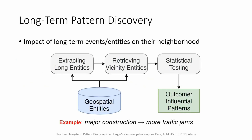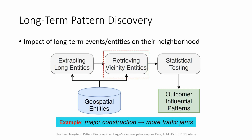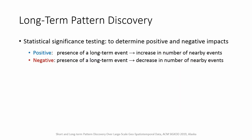We also propose a new process for long-term pattern discovery. An example of such a pattern is the existence of a major construction event which causes more traffic jams. Our process first extracts long-term entities such as a major construction or a long rain. Then, it examines the spatiotemporal neighborhood of a long-term entity to explore how such an entity impacted the traffic flow using statistical significance testing.